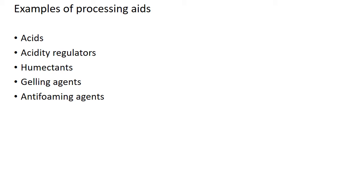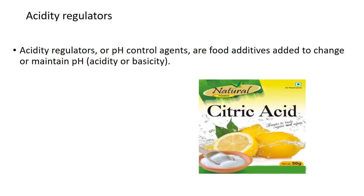Some examples of processing aids are acids, acidity regulators, humectants, gelling agents, and anti-foaming agents. Now let us move on to acidity regulators. Acidity regulators or pH control agents are food additives which are added to change or maintain the pH.